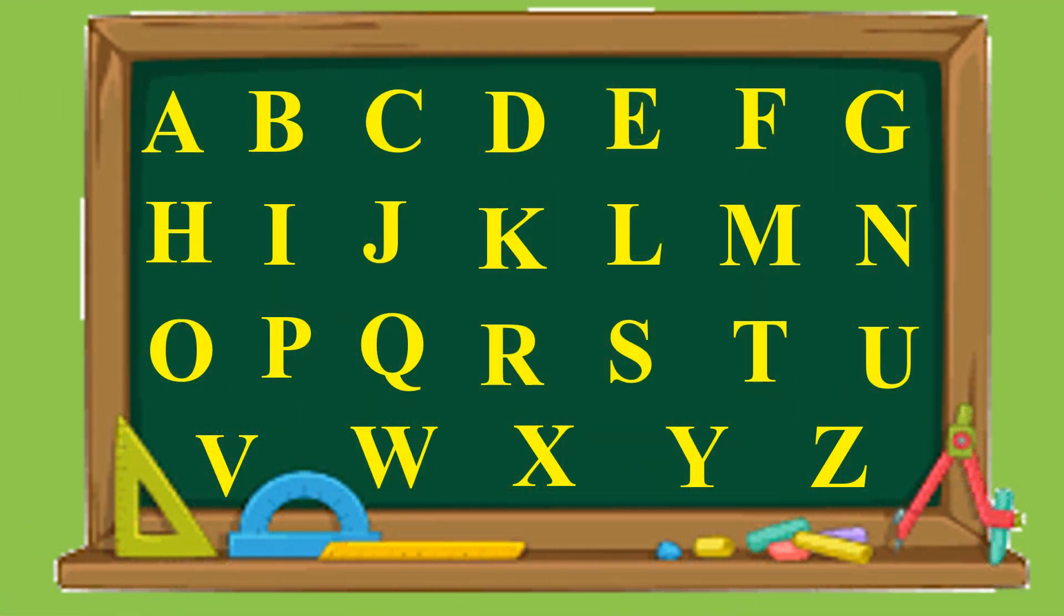We all know there are 26 alphabets in the English language. In the alphabet there are two different types of letters: vowels and consonants.